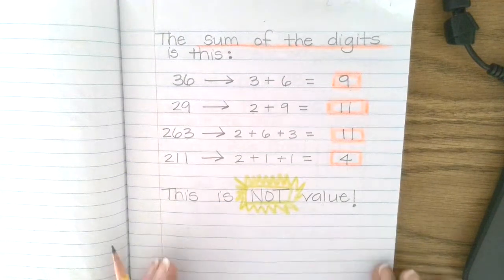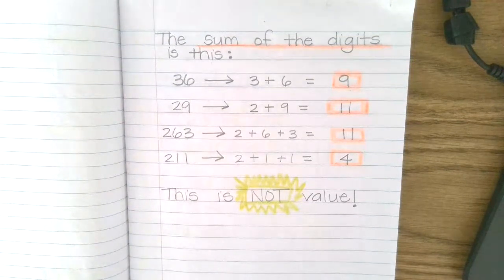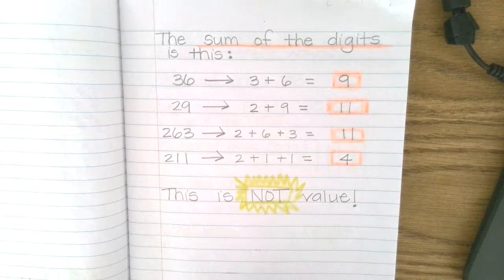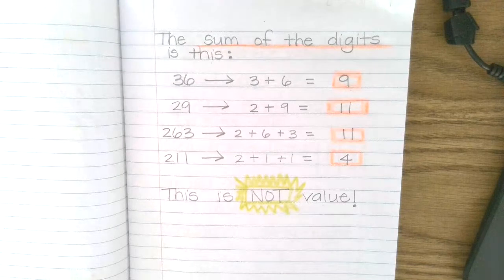So hit pause now and copy this down. Get page eight done and make sure that you know in your brain what sum of the digits is. And then I'm going to have you look at your math assignment.